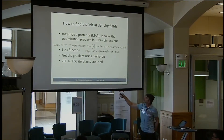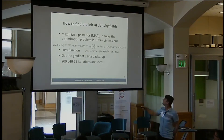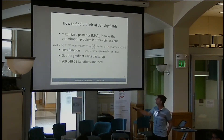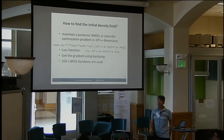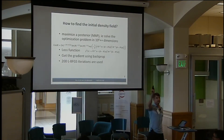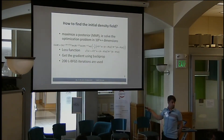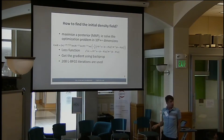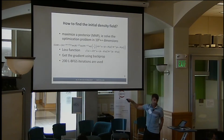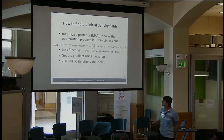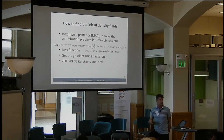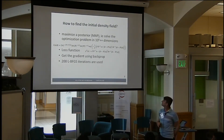The loss function: we have a prior over Fourier modes — the covariance matrix is diagonal in Fourier space. Then we have this forward model which takes these Fourier modes and generates data, plus some noise source in the data. This is the loss function we want to solve. Since we have a gradient, we actually solve this with about a few hundred BFGS iterations.